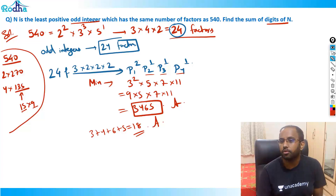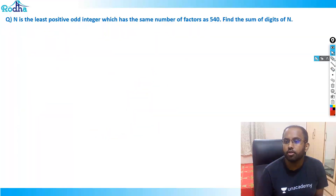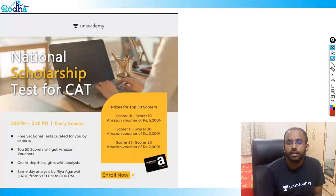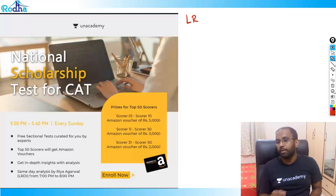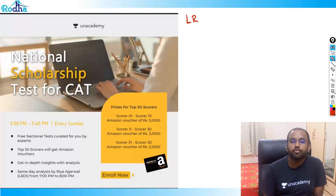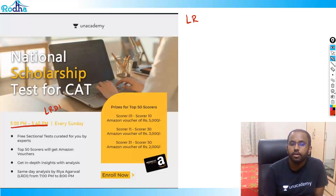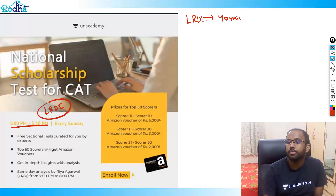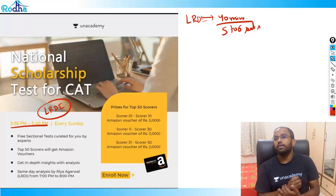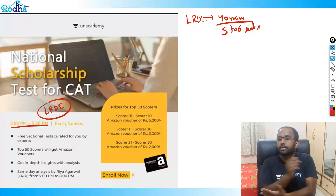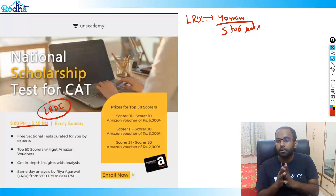As I informed earlier, we have a National Scholarship Test running at the academy. This Sunday it is the LRDI sectional test. Last Sunday was for quant — a lot of people appeared for that. This LRDI sectional test runs from 5 to 5:40 PM every Sunday. We have prepared it for 40 minutes as per the new CAT pattern. It could be five or six sets in CAT — nobody knows — so we'll fluctuate between five and six sets across sectionals to prepare you for the best and worst situations.